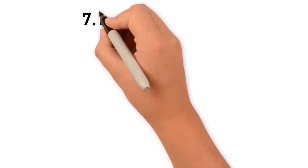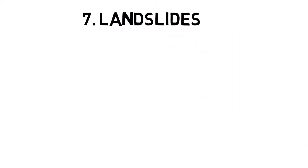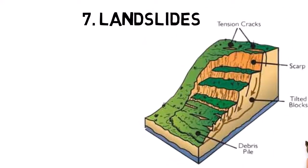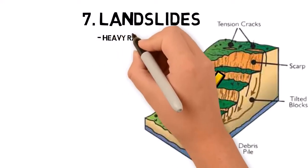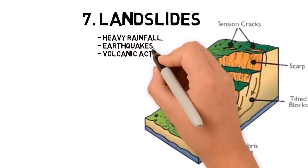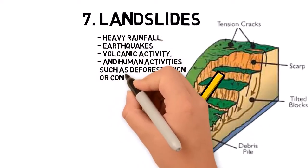Landslides occur when a mass of rock, soil, or debris moves down a slope due to gravity. They can be triggered by a variety of factors, including heavy rainfall, earthquakes, volcanic activity, and human activities such as deforestation or construction.